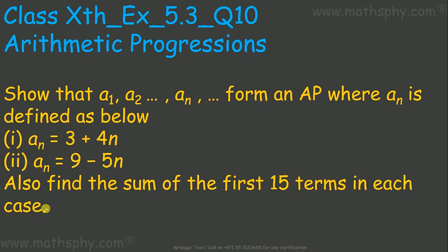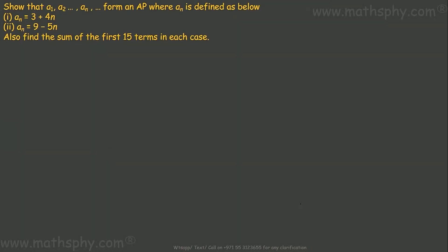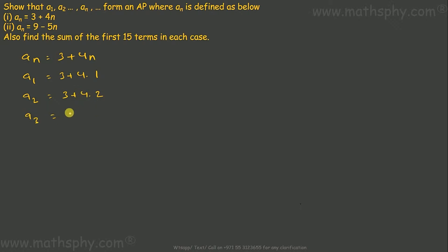Let's take the first case. Here an is 3 plus 4n, so a1 would be 3 plus 4 into 1, a2 would be 3 plus 4 into 2, a3 would be 3 plus 4 into 3, and likewise a15 would be 3 plus 4 into 15.